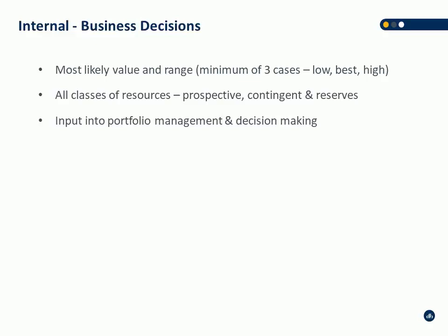PRMS really focuses on providing a range. You're going to have a best-case estimate, and the range gives you an idea of what the high and low could be. It includes all classes of resources — prospective, contingent, and reserves — and it's used as an input into portfolio management decisions. This is really how companies decide where they're going to deploy their capital. If a company has 100 properties, the reserves evaluation is often a starting point for how they should deploy their development capital amongst those properties.